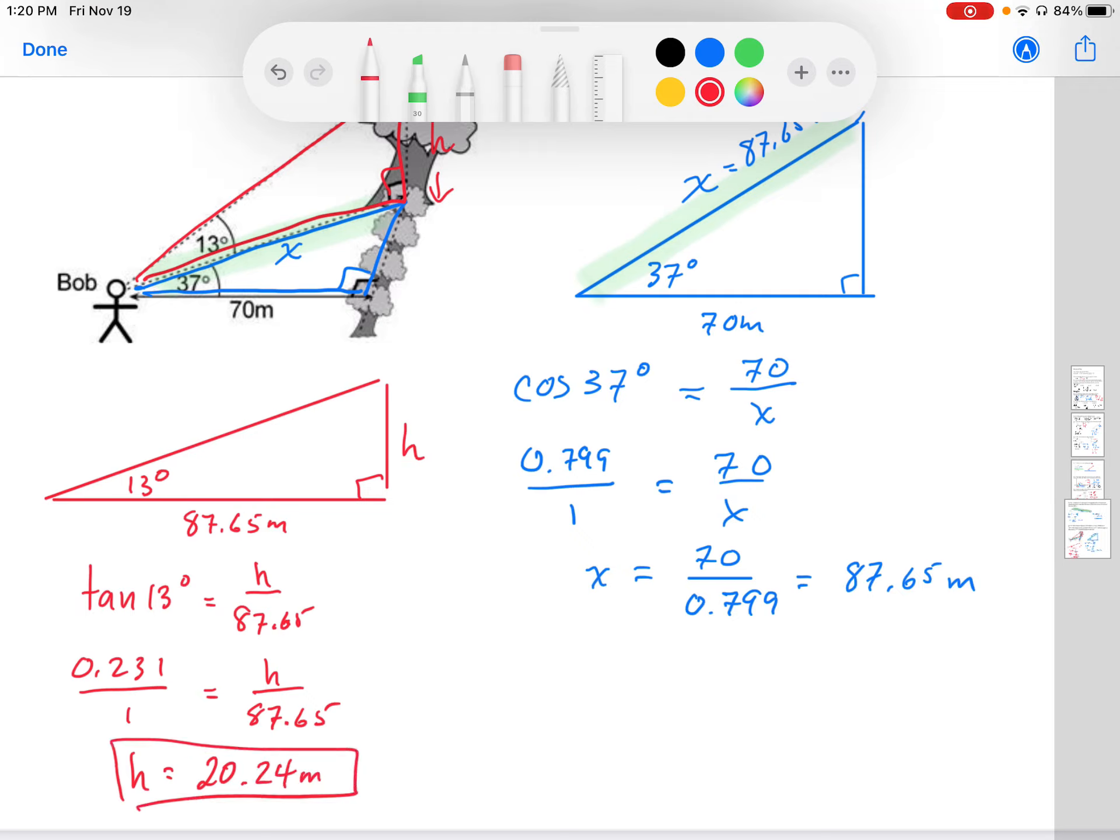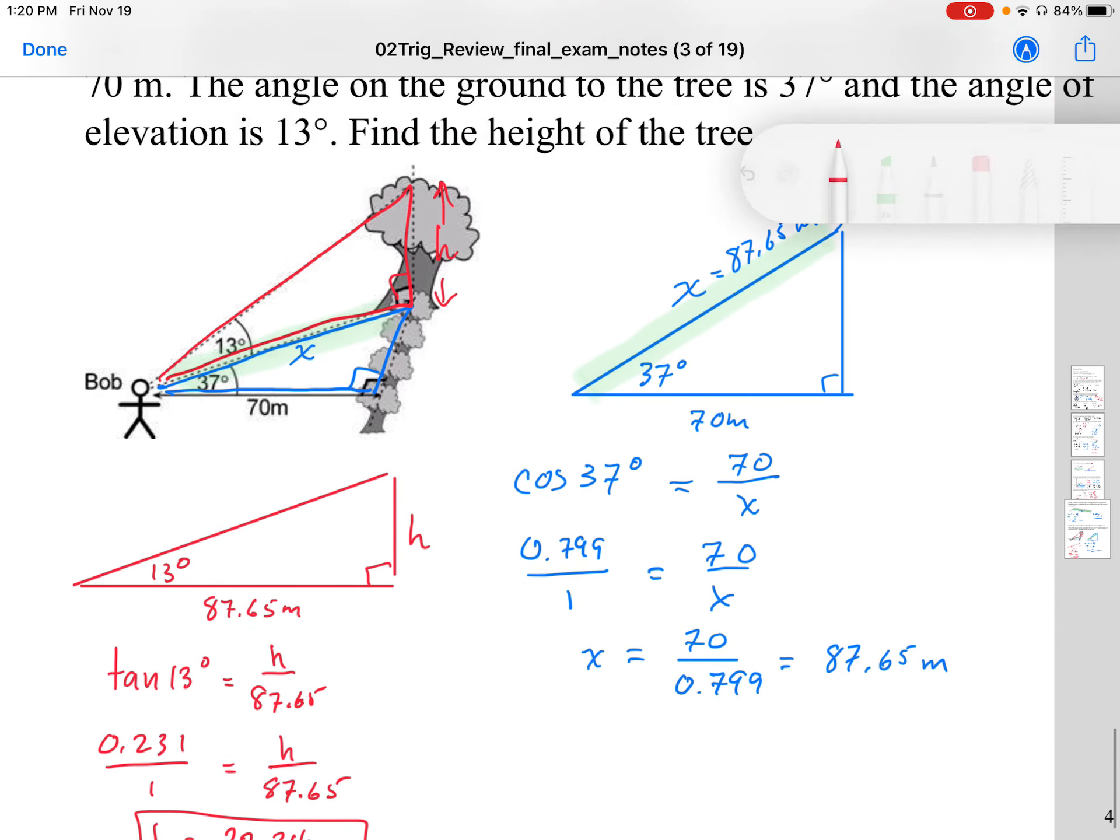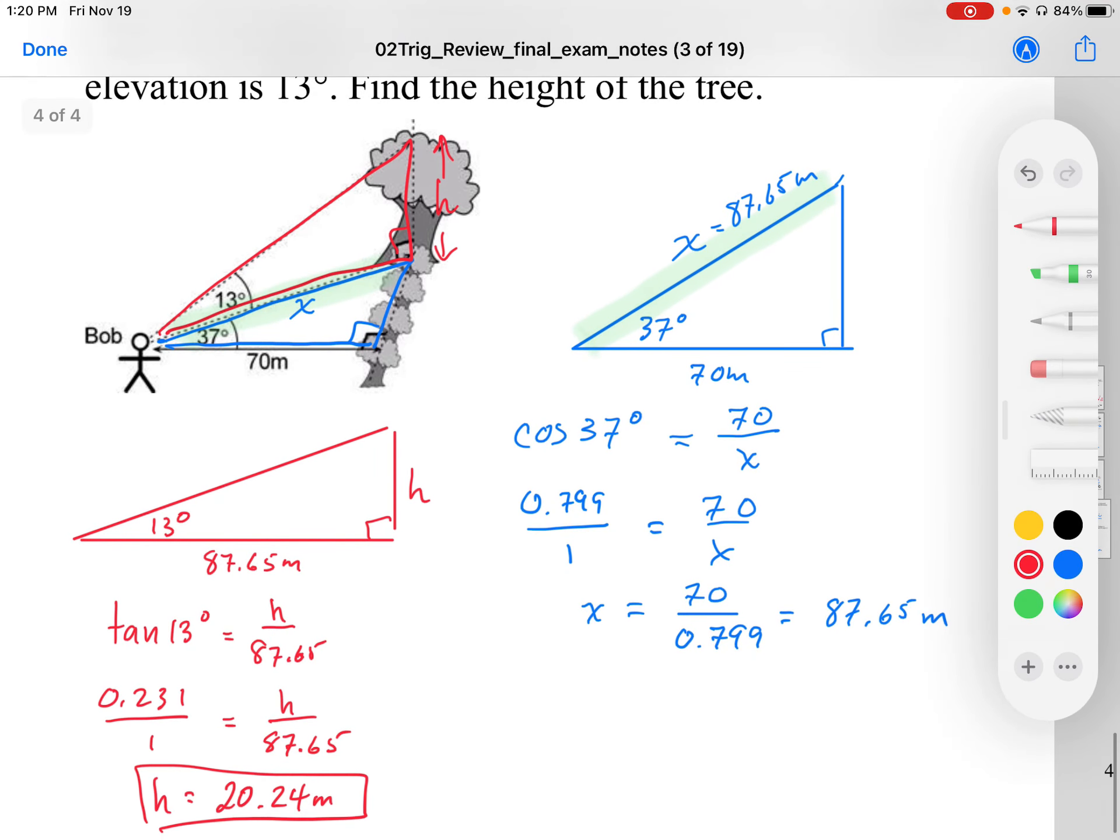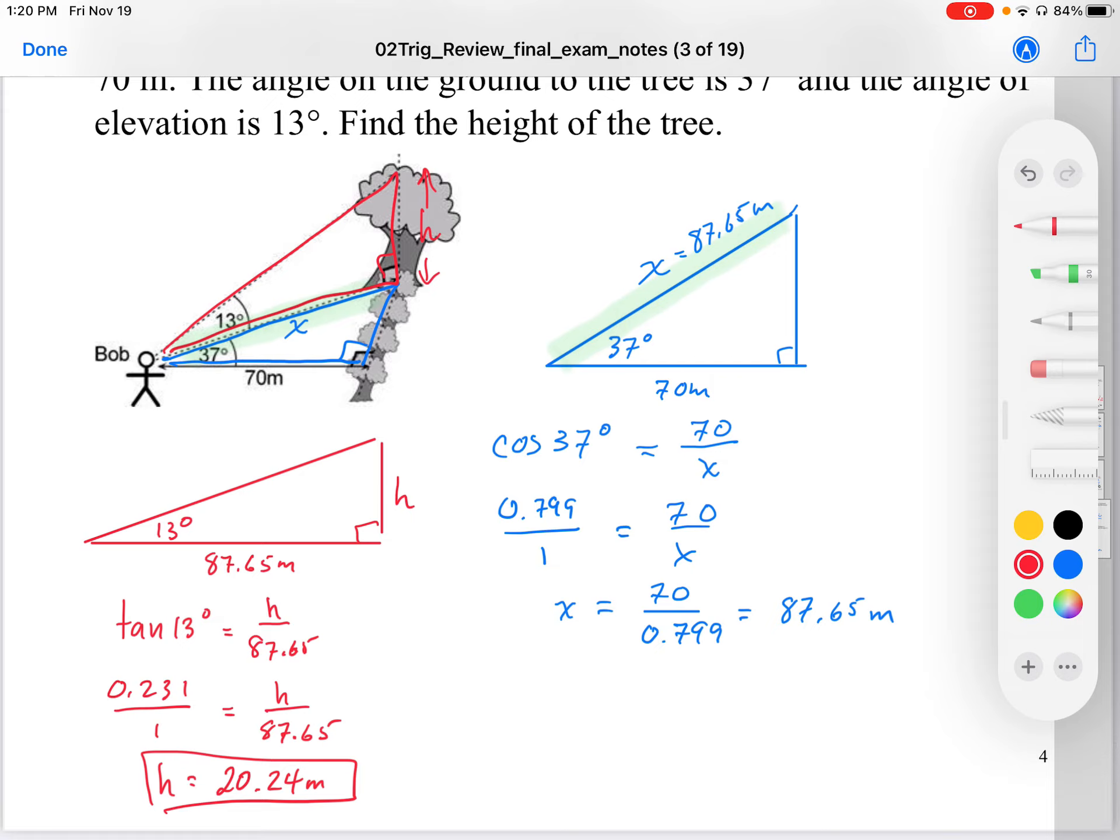So that represents the height of that tree in this diagram. Now with all these decimal calculations, you may be off by a little bit and that's okay. Depends on how much you're rounding. You should try to keep at least two decimals when you round for calculations. If you're going to use that number for another calculation, you should use at least two decimals worth of accuracy. You may be a little bit off in your calculations, but that's okay. That's well within reason.